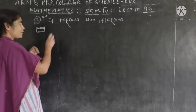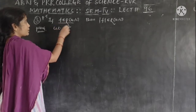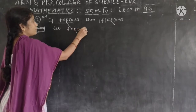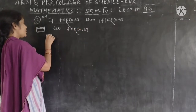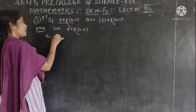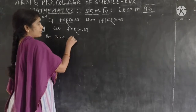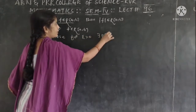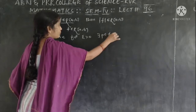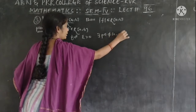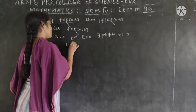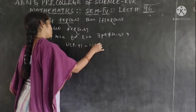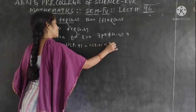F is a Riemann integrable function. If F is Riemann integrable, then by the necessary and sufficient condition, for given epsilon being a positive quantity, there exists a partition P of closed [a, b] such that U(P,F) minus L(P,F) is less than epsilon.